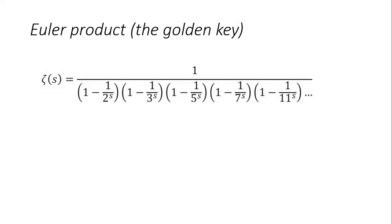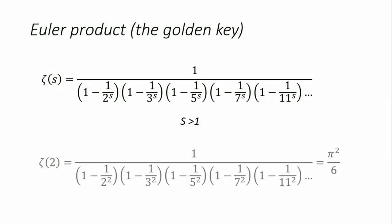Here we have the Euler product. This expression is equal to the zeta function and has the same domain. However, there are some differences: the Euler product consists of an infinite product over prime numbers. If we insert any value such as 2 into the Euler product, we get the same result as the zeta function — pi squared over 6.